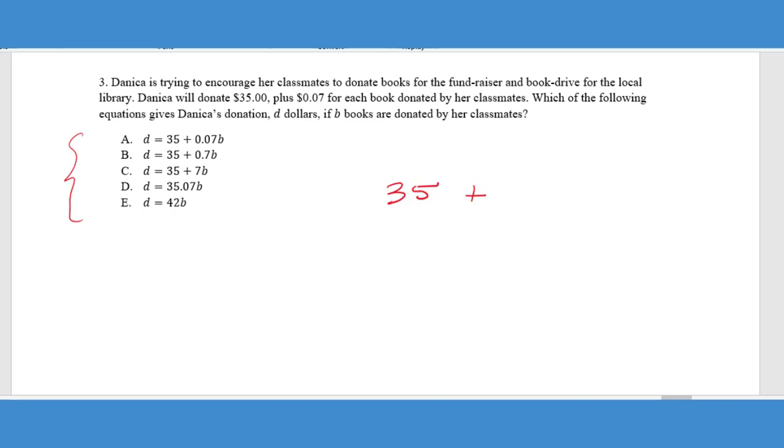So we know that she's going to donate $35 plus, I'm going to go ahead and put a plus sign to represent that word plus, seven cents for each book. So whenever we see this from a translation standpoint for each book, we know, and it says here later on in the problem, which of the following equations gives Danica's donation in dollars. So we want to know her dollars for every book that is donated.